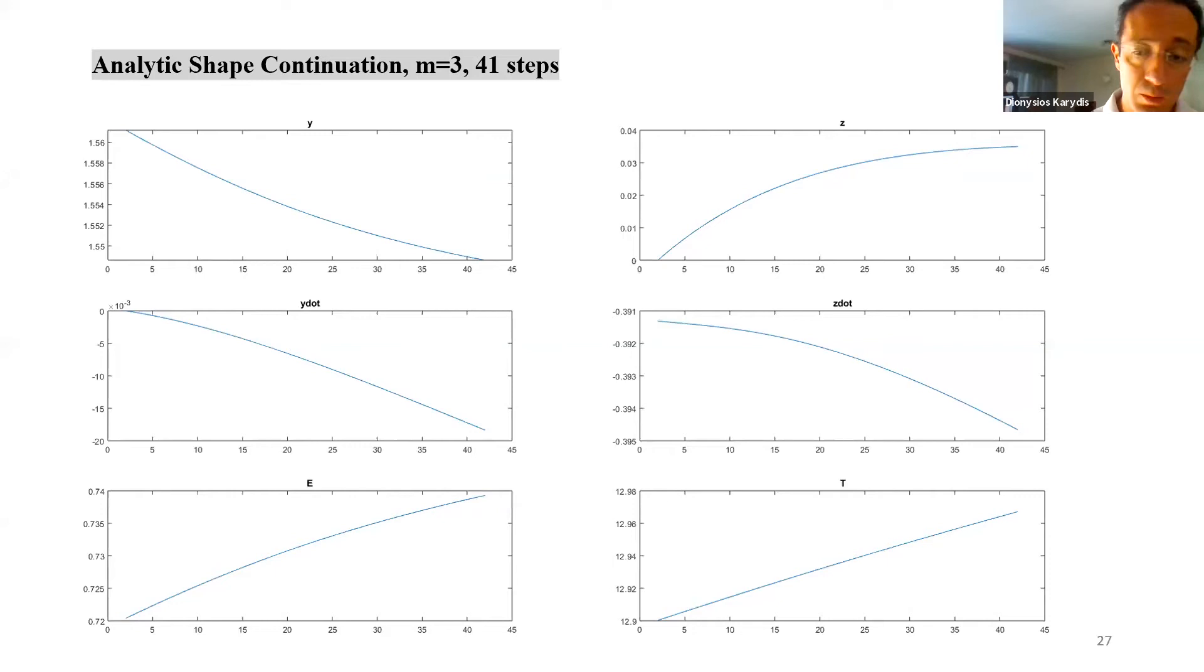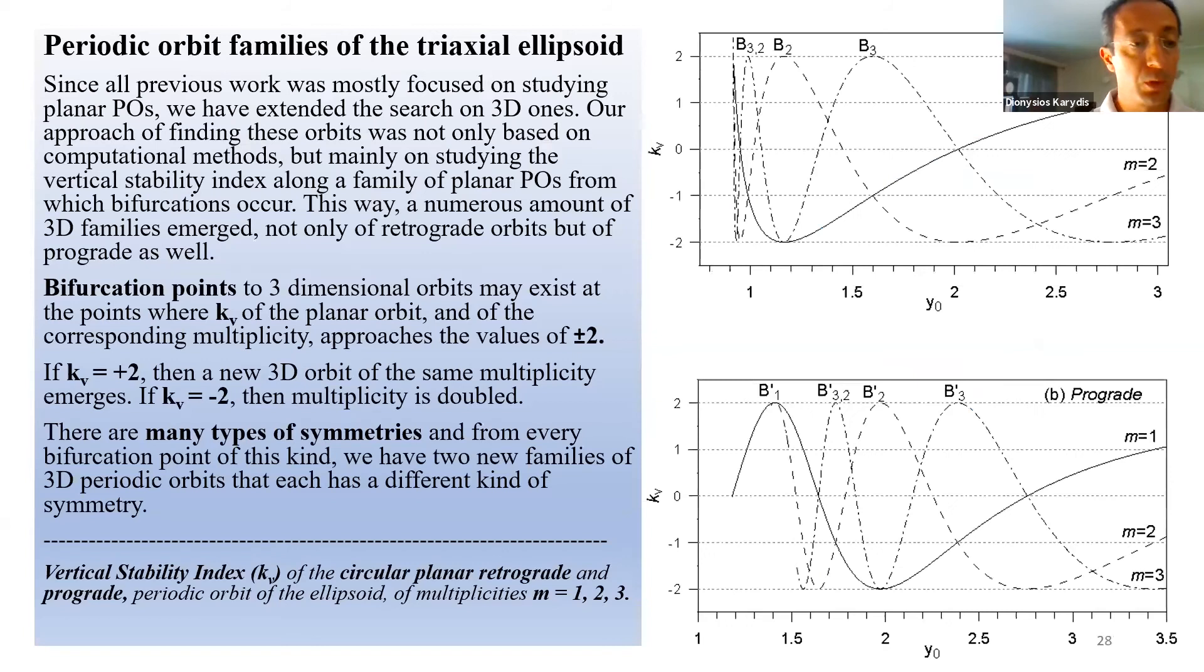And we will start now by studying some of the periodic orbit families of the triaxial ellipsoid. Since all previous work was mostly focused on studying planar periodic orbits, we have extended the search for three-dimensional ones. In addition, our approach of finding these orbits was not only based on purely computational methods, but mainly on studying the vertical stability index along a family of planar periodic orbits from which bifurcations occur. These bifurcations arise at certain points of the family where the vertical stability index crosses the values of plus or minus 2. The figure shows the vertical stability index of the circular, planar, retrograde, and prograde periodic orbit of the ellipsoid for the first three multiplicities.